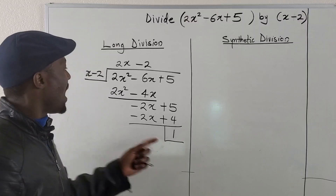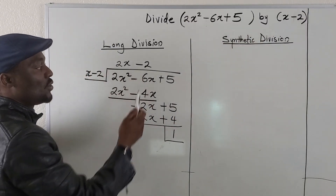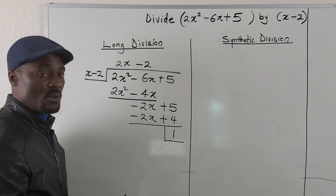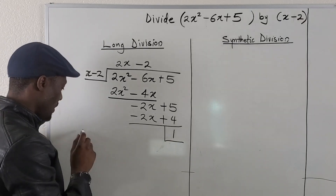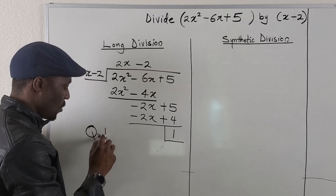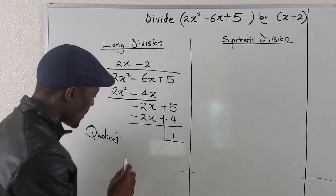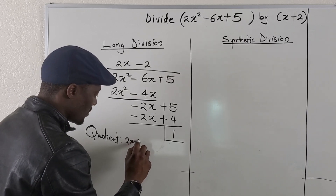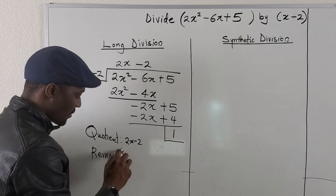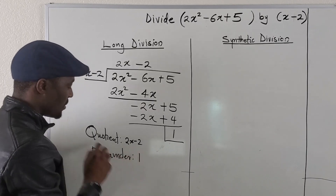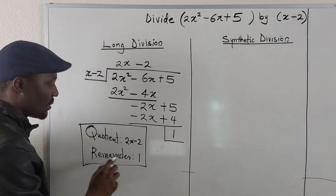Once you have a remainder, you want to end your calculation. Basically, this is what you have when you divide this polynomial by this polynomial. Your quotient will be 2x minus 2, and the remainder will be 1.